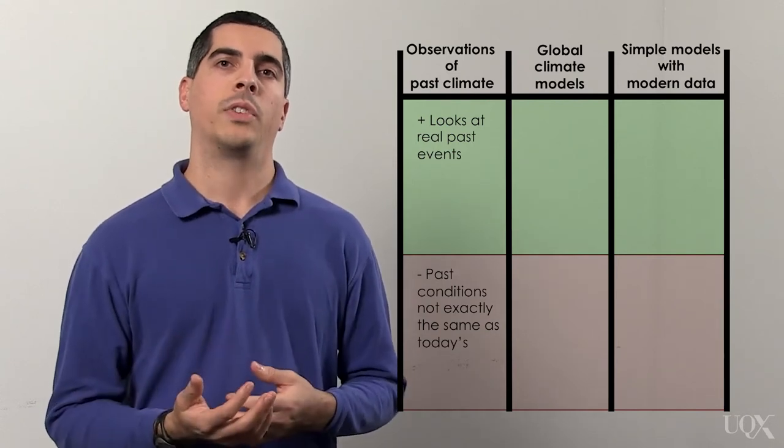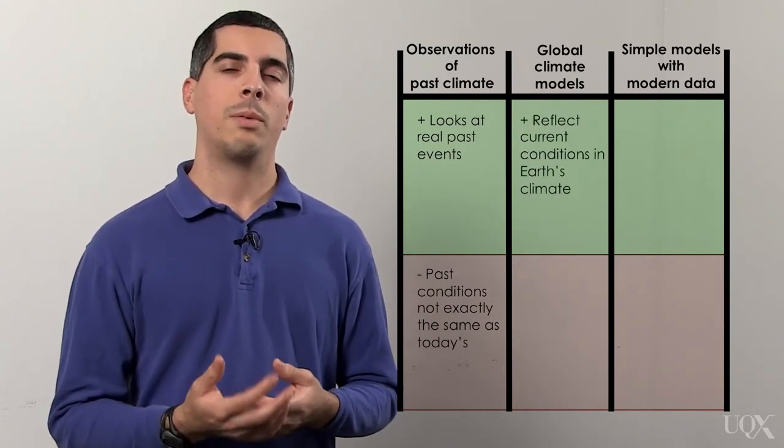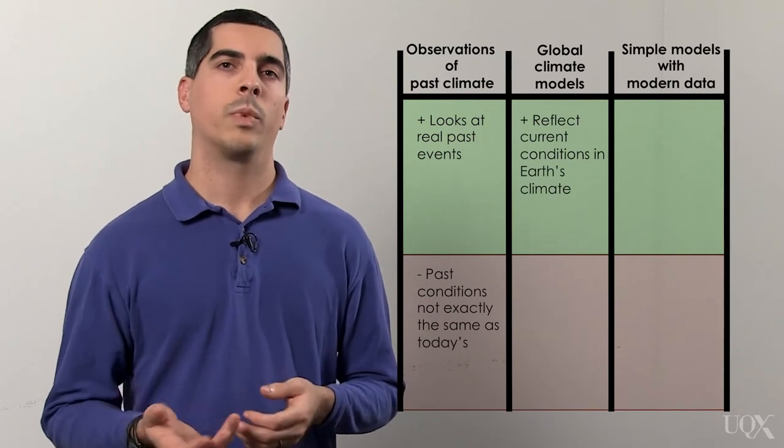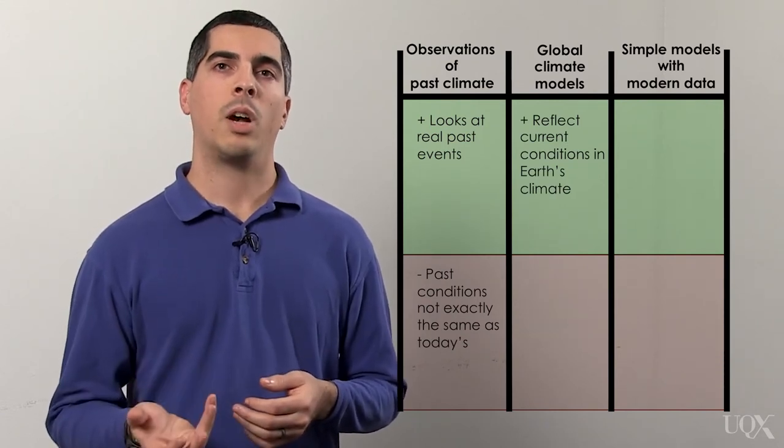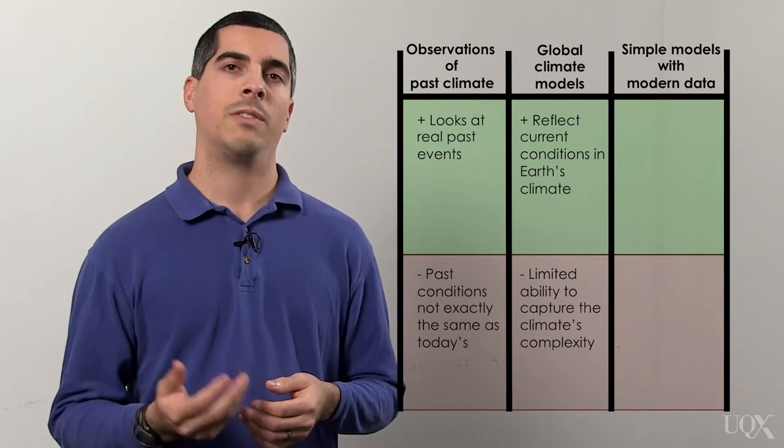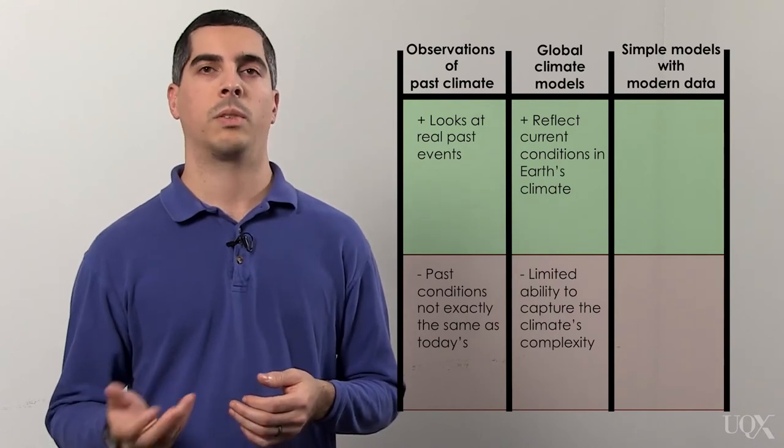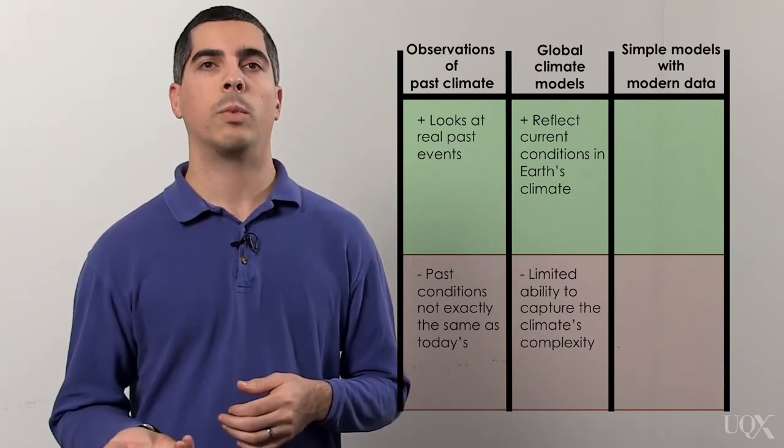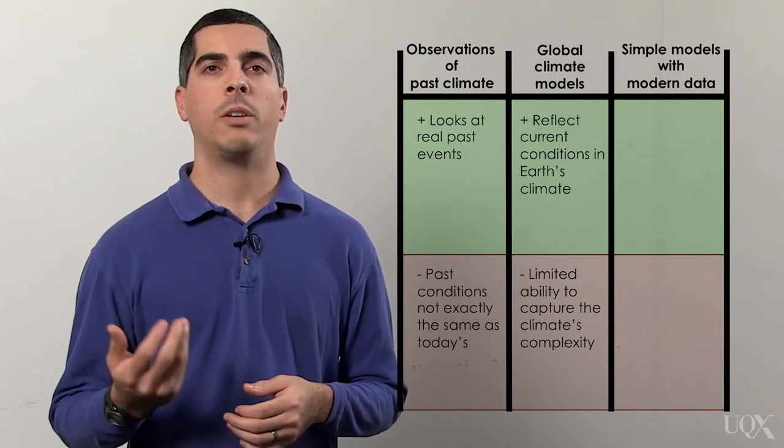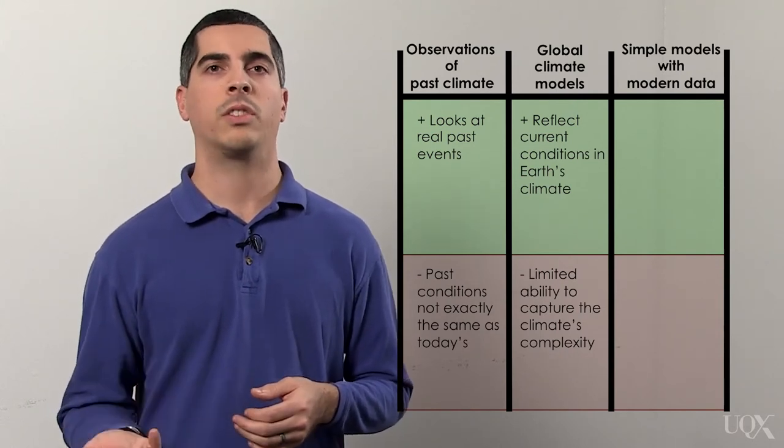The strength of global climate models is that they let us estimate how sensitive the climate is under today's conditions. The weakness is that they're limited by how well we understand all the processes that influence the Earth's complex climate system. For example, most climate models don't take into account factors like the response of permafrost in the Arctic.